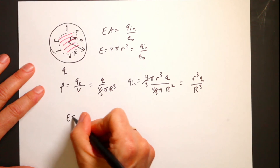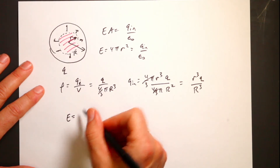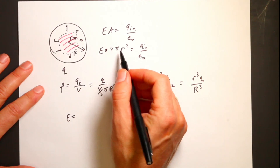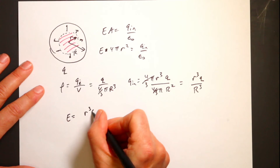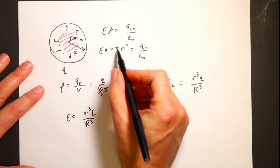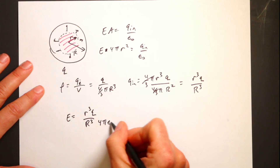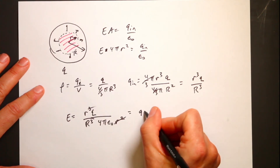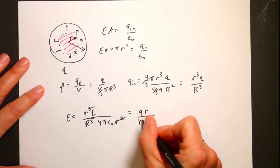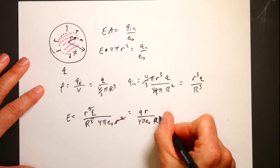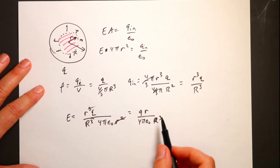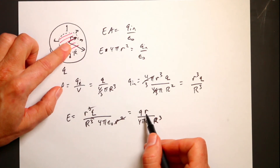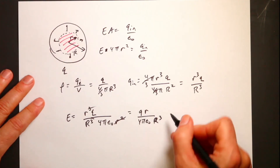Putting it all together and dividing both sides by 4π r squared, E equals Q times r over (4π epsilon-naught times R cubed). So inside the sphere, the electric field increases linearly as you move away from the center, and at the center where r equals zero, the electric field is zero.